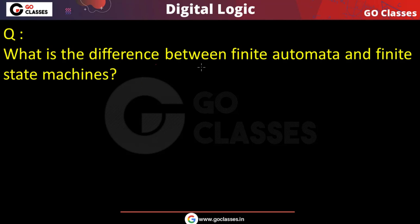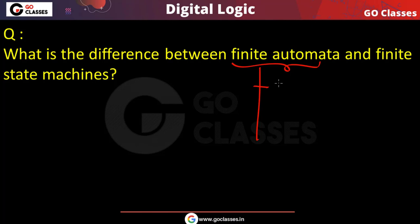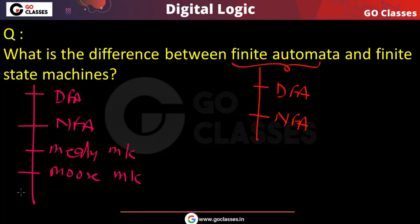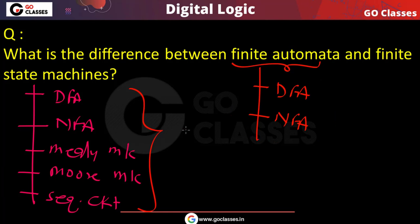Many students get confused about the difference between finite automata and finite state machine. DFA and NFA are finite automata. But finite state machines include many more things - DFA, NFA, Mealy machine, Moore machine, sequential circuit. Every finite automata is a finite state machine, but finite state machine can be anything which has finite number of states.